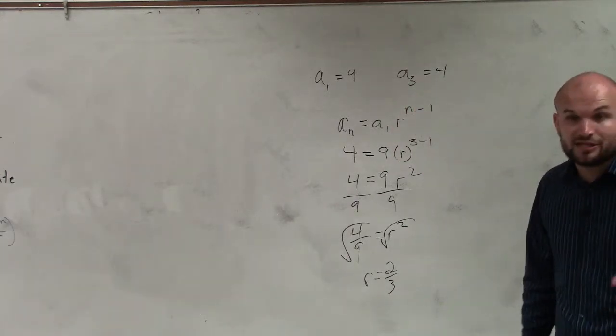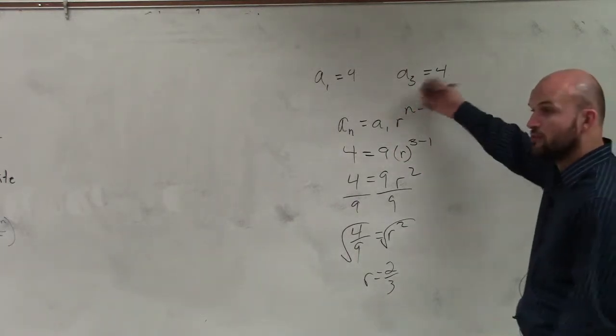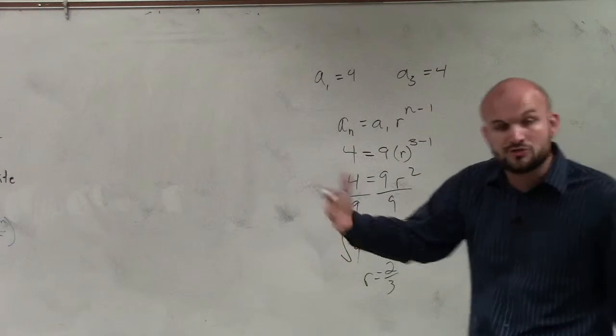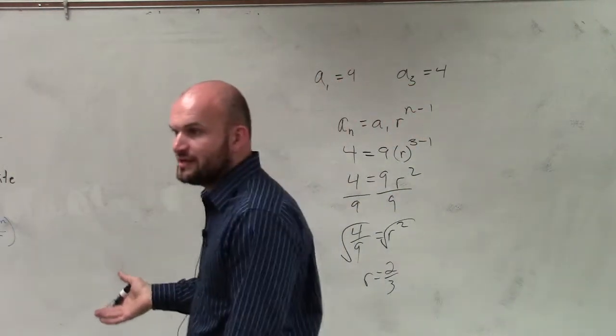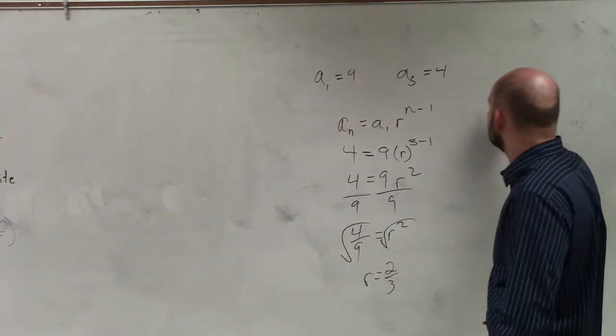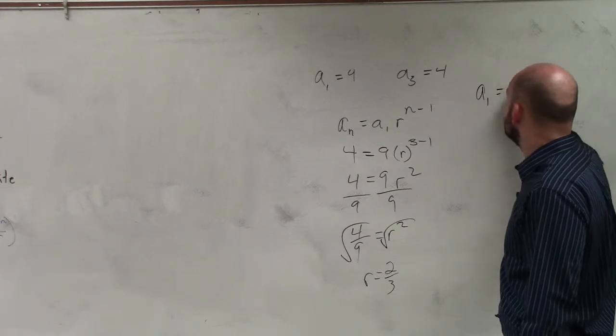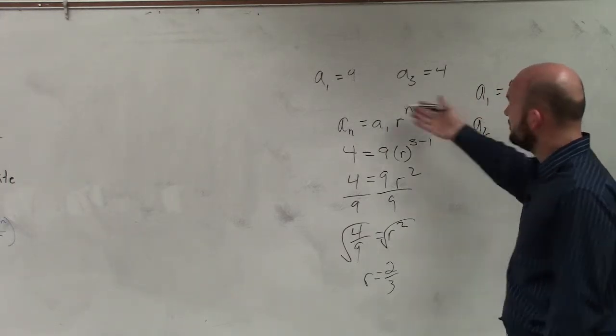I need to identify the first five terms. I'm going to use the formula because this is easier than finding the common ratio directly sometimes. So I have a sub 1, which is 9. For a sub 2, let's use the formula.